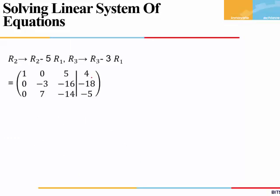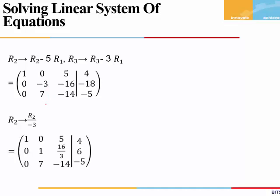By taking the elementary row transformations R2 = R2 − 5R1 and R3 = R3 − 3R1, these two values have become 0. When we move to our second row, we see the first non-zero entry is −3. This is our pivot. We can leave this −3 or we can make it 1. Let's make it 1.